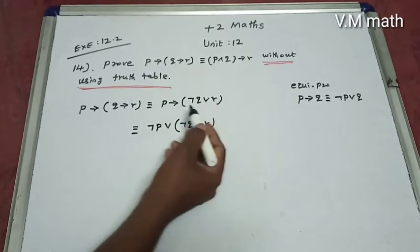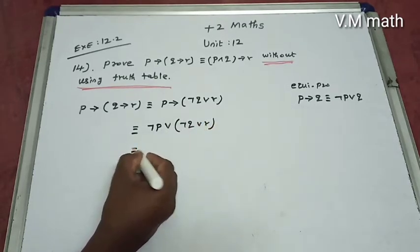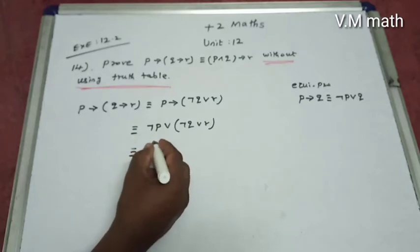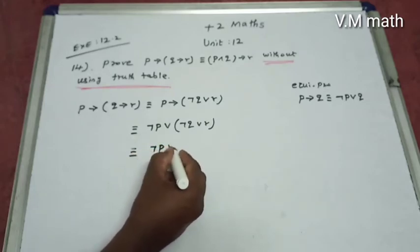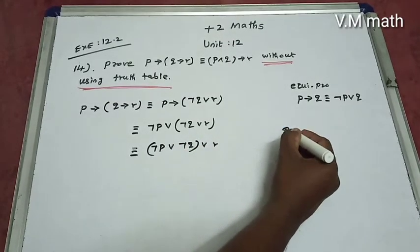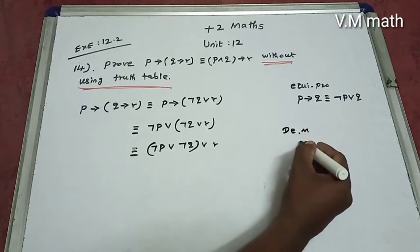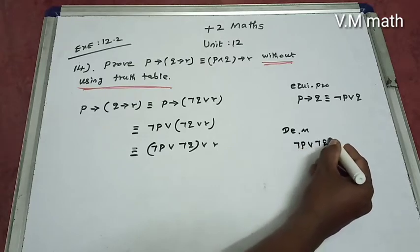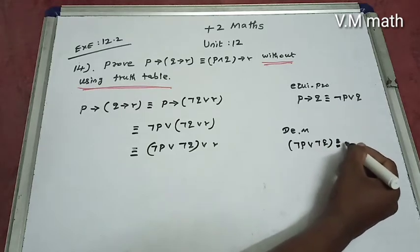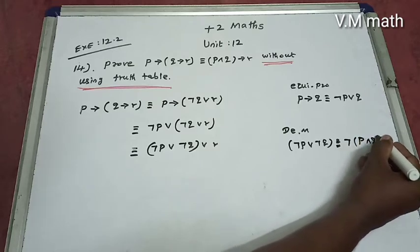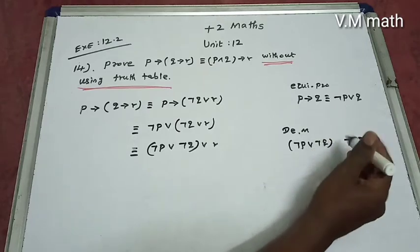We want to change this using a property. Here we change negative p or negative q — grouped in a bracket — and change the property. This uses De Morgan's law. De Morgan's law states: negation of p or negation of q is equal to negation of p and q.